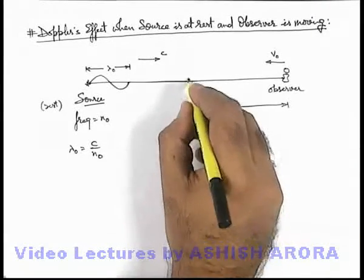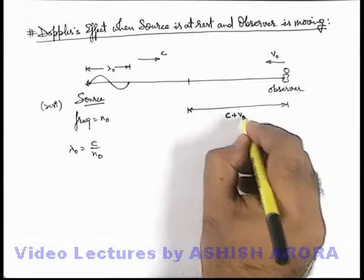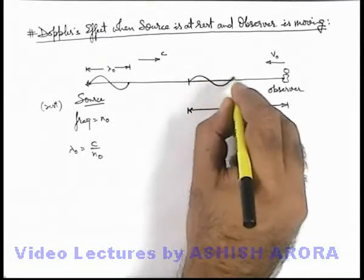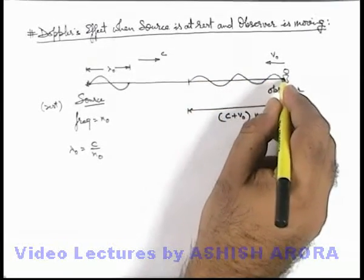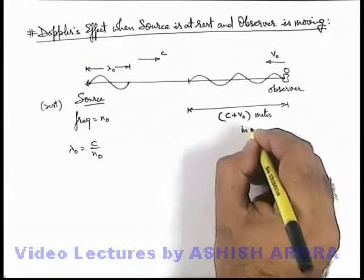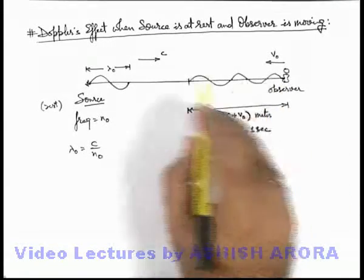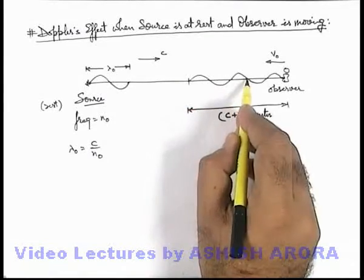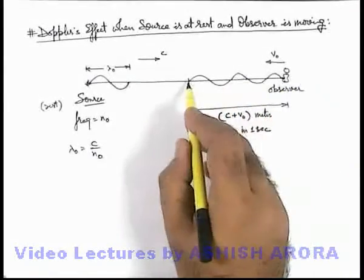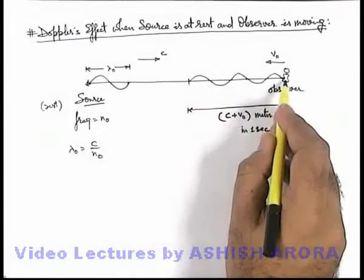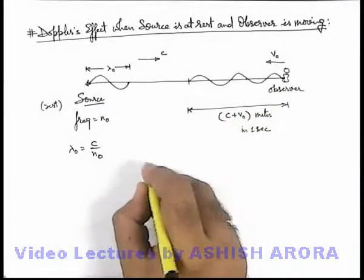...we can say the total number of oscillations which are there in c plus v₀ meter length will be received by the observer in 1 second. Because in 1 second observer will travel a distance v₀, the wave will travel a distance c. So in total with respect to observer, the length c plus v₀ meter will be absorbed by the observer.